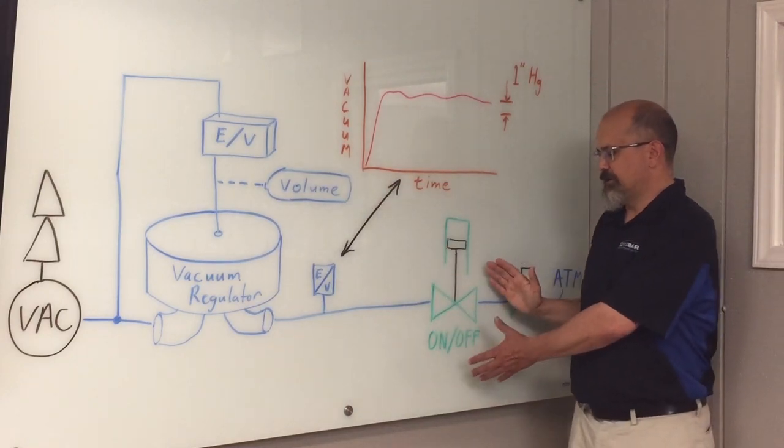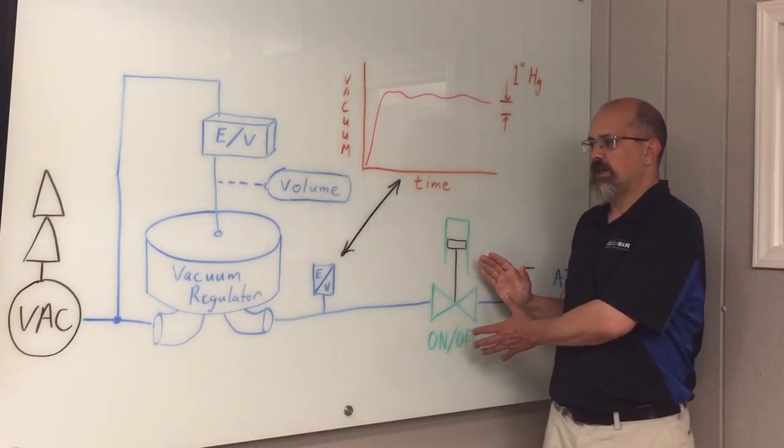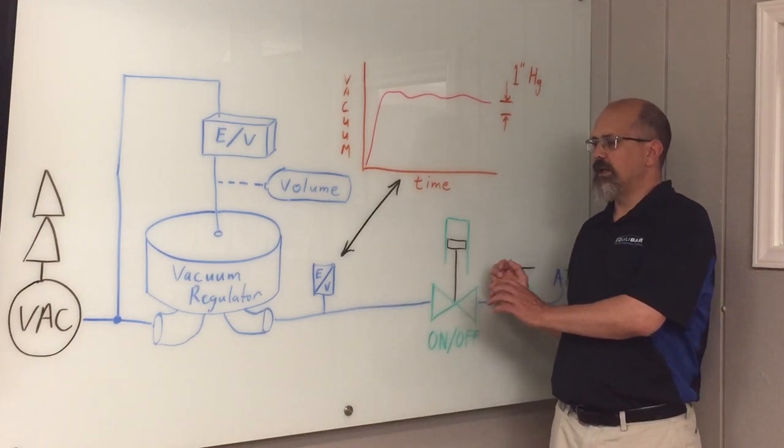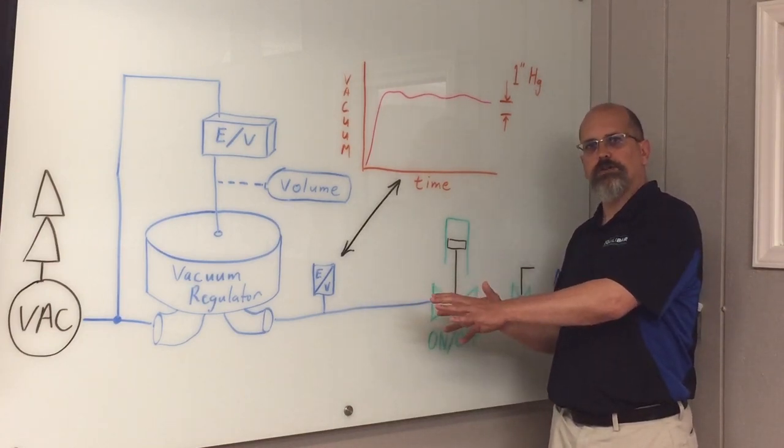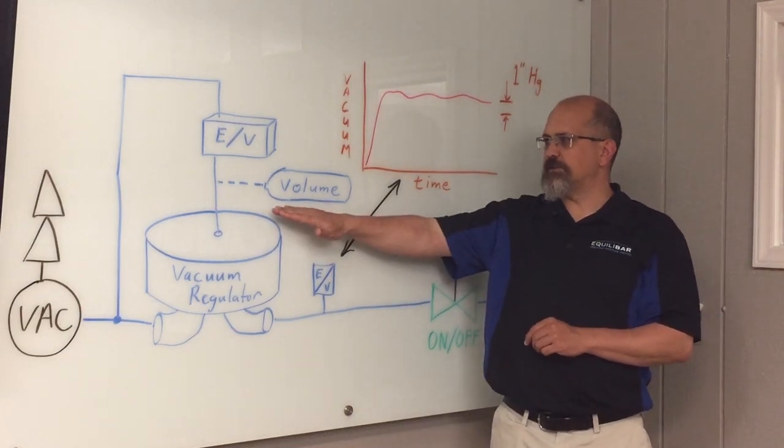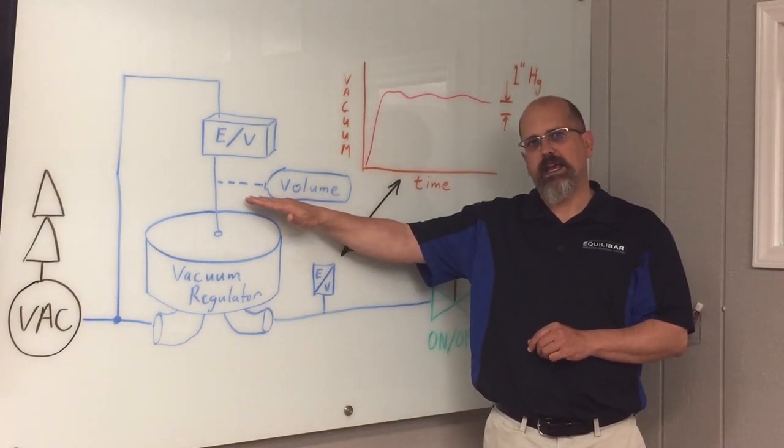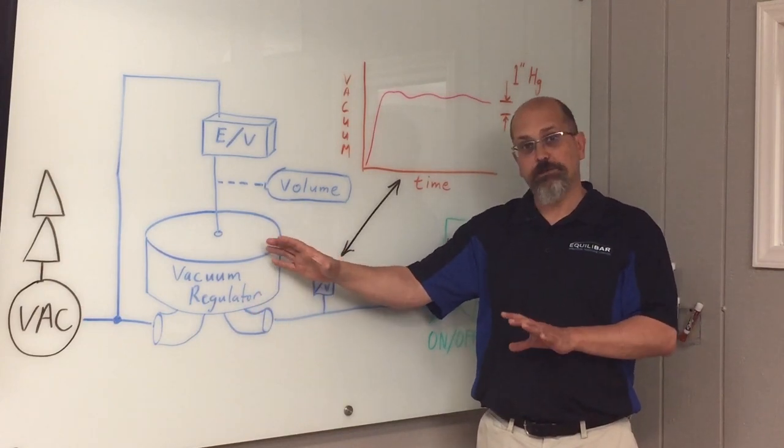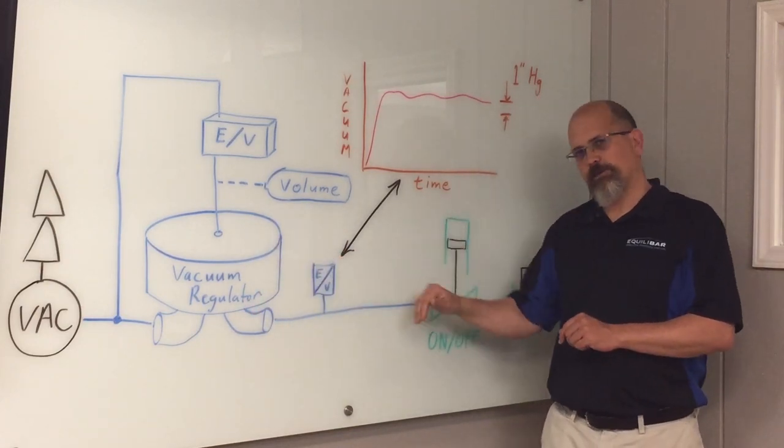And in a case like this where we have an on-off valve where the pressure that we want to control is stable, static, but the flow going in and out of the system alternates, we actually add some capacitance to the pilot, and that allows the vacuum regulator to quickly shift position and make up for that flow disturbance.